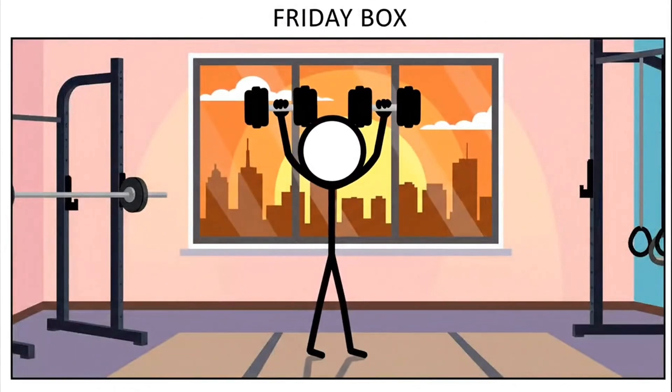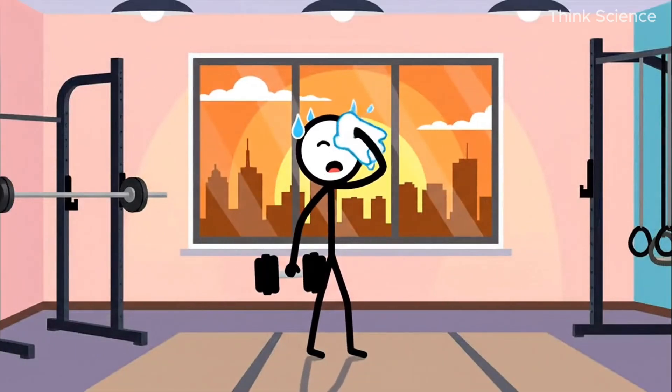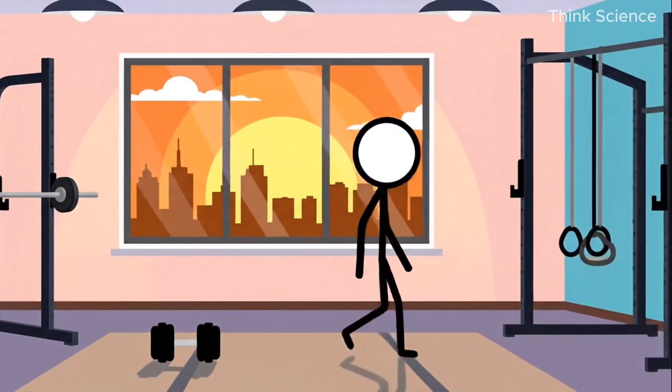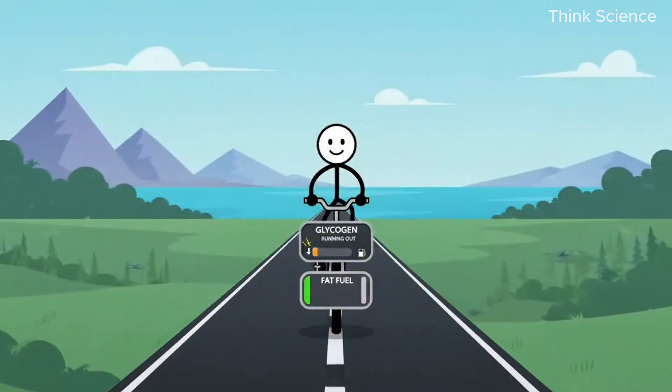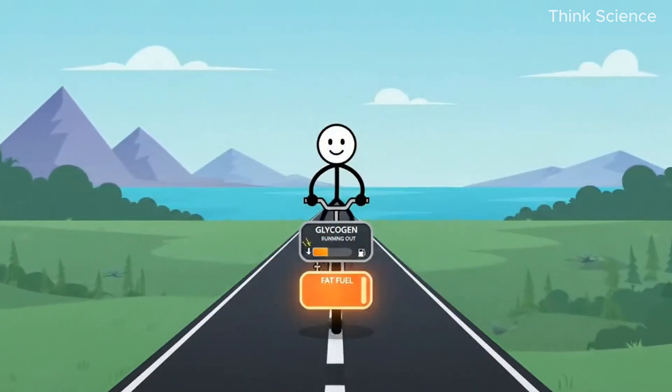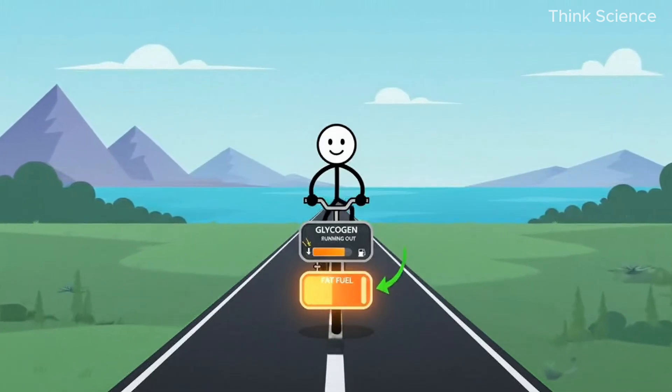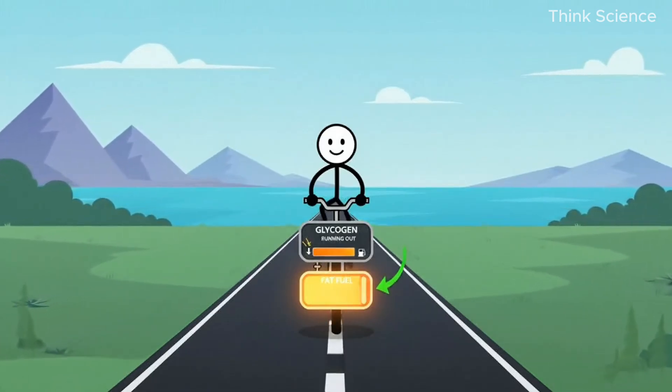Friday, another strength session—upper or lower split. Again, finish with a slow walk. Saturday, long duration cardio—60 to 75 minutes. Keep it slow and steady. The last 30 minutes is when fat becomes your main fuel source.